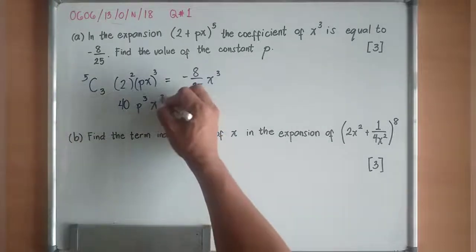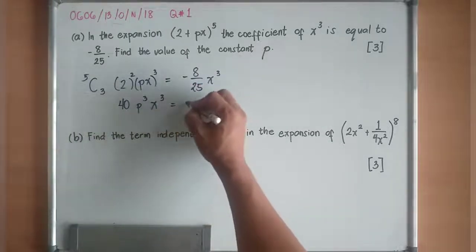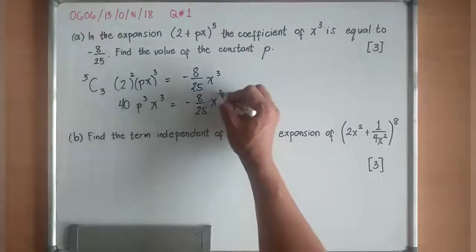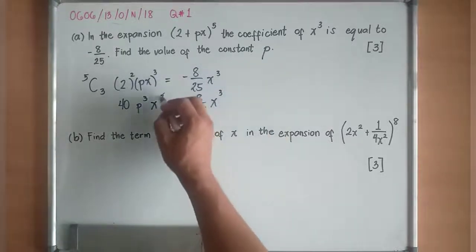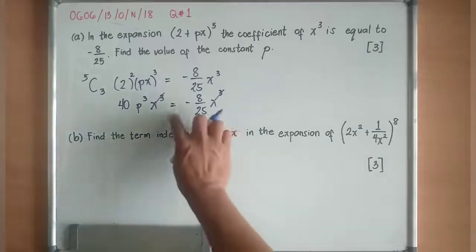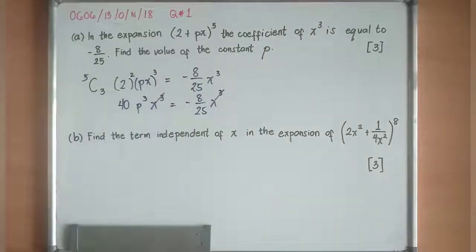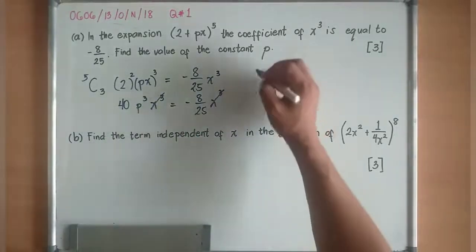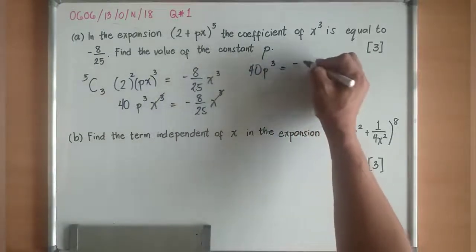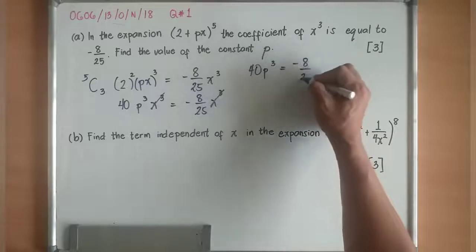Then x^3, which is equivalent now to -8/25 x^3. Basically, I can remove the x^3 from both sides. It will become 40p^3 is equal now to -8/25.